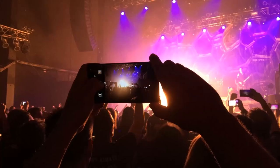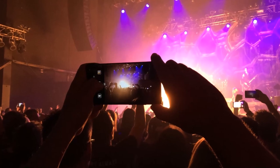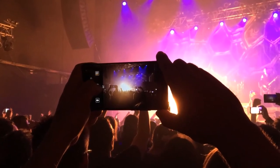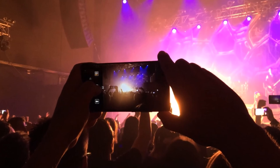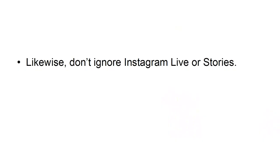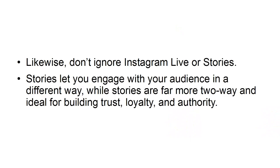4. Use Video, Live, and Stories. Instagram isn't just about posting photos. Video actually has greater engagement than photography on the platform, and it can also help you convey a more complex message more efficiently. Likewise, don't ignore Instagram Live or Stories. Stories let you engage with your audience in a different way, and Live is far more two-way and ideal for building trust, loyalty, and authority.